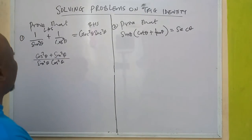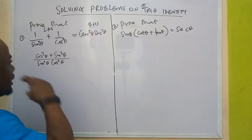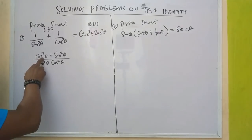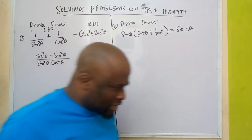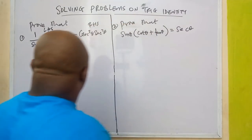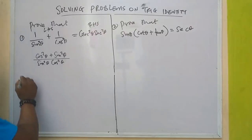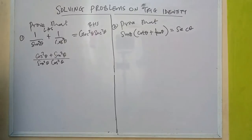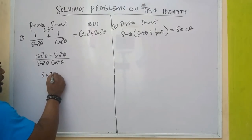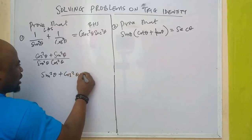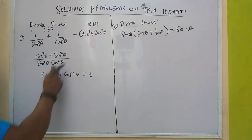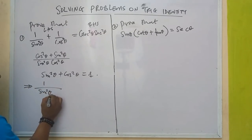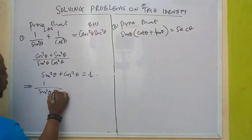You can see we are making use of our knowledge from elementary school. What is next? This gives us cos²θ plus sine²θ. And in my previous class on trig identities, I said sine²θ plus cos²θ equals 1. So I am going to replace everything I have here with 1.